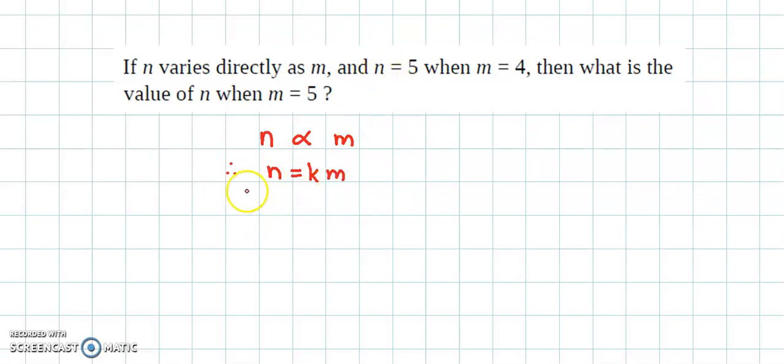Now we have been given that n is equal to 5 when m equals 4. So let us make the substitution. We have 5 is equal to k times 4, so k is equal to 5 by 4.